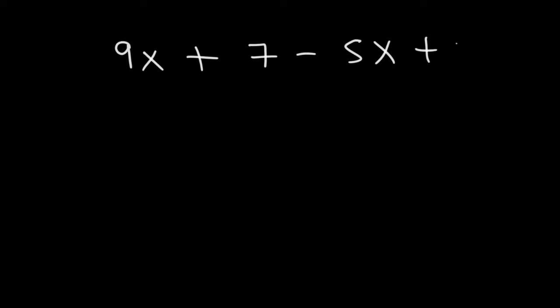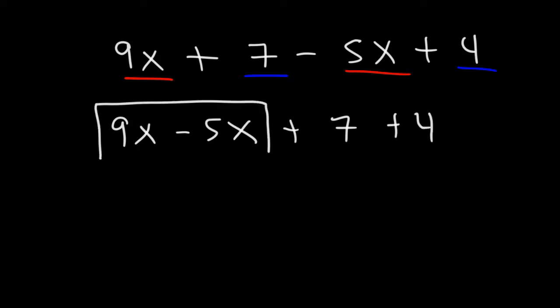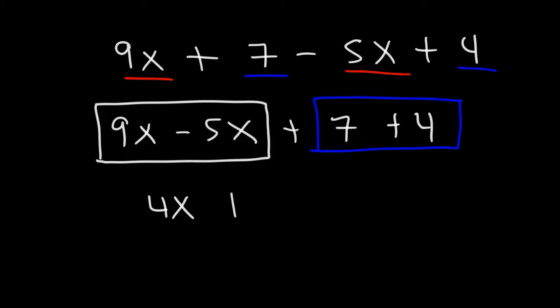Let's work on another example: 9x plus 7 minus 5x plus 4. The like terms are 9x and 5x, and also 7 and 4, which are both constant terms. Rewriting: 9x minus 5x gives 4x, and 7 plus 4 gives 11. So the final answer for this problem is 4x plus 11.